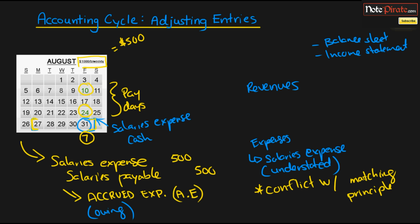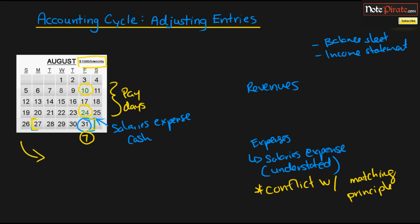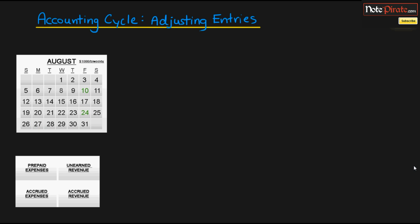That is our adjusting entry. By recording it, all of the expenses for August will be matched with all of the revenues for August, and our income statement will correctly reflect everything in the period. I've created a table showing the different types of adjusting entries. We've covered accrued expenses. Note that accrued expenses and prepaid expenses are opposites — prepaid means you've already paid; accrued means you've incurred the expense but haven't paid yet. We'll cover all the other types in the supplemental videos.